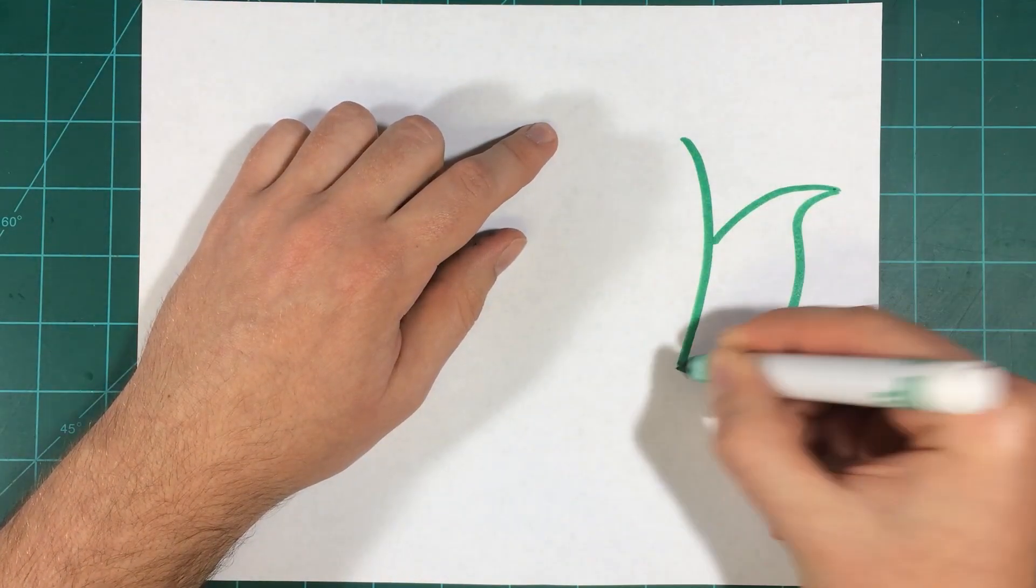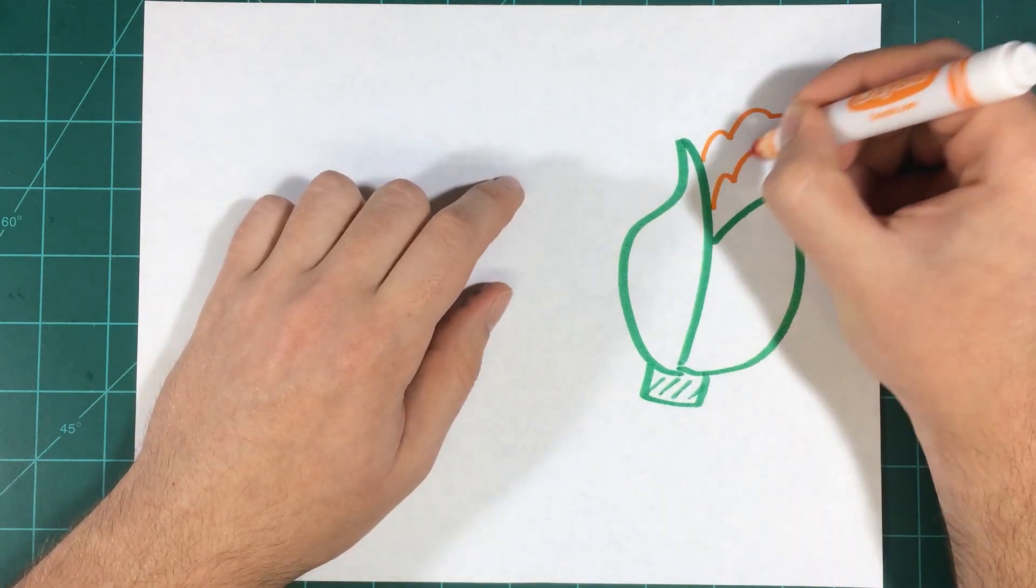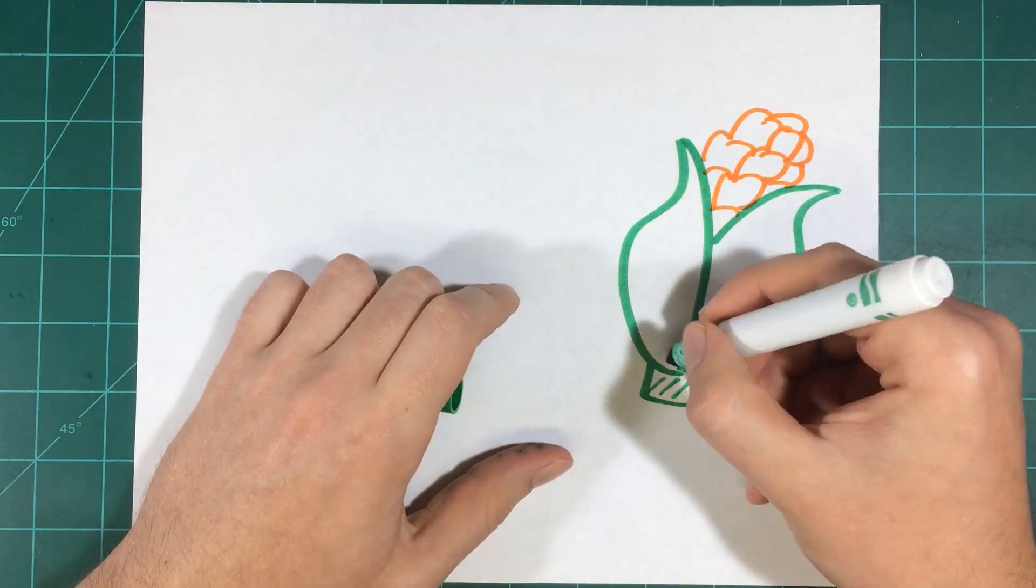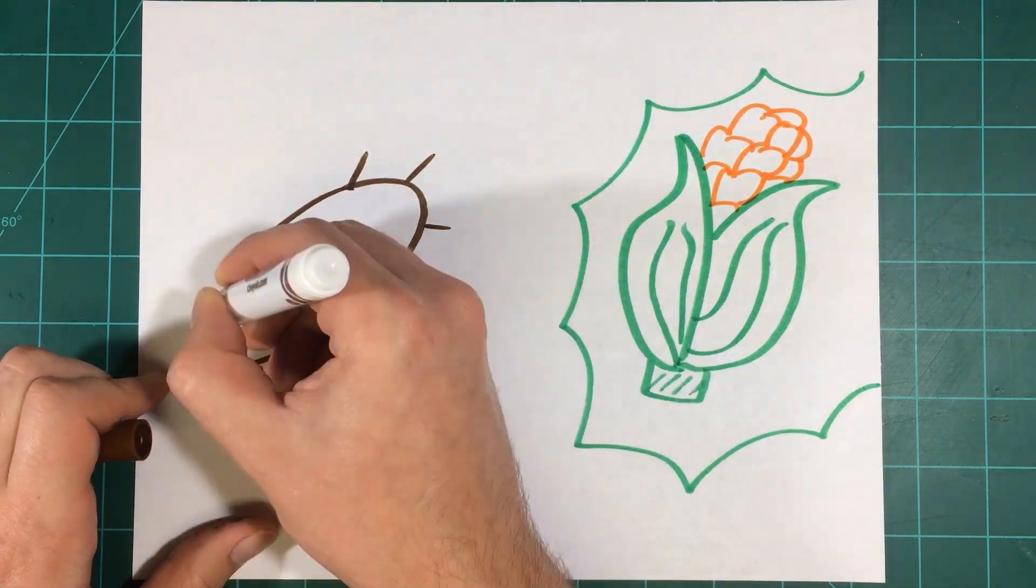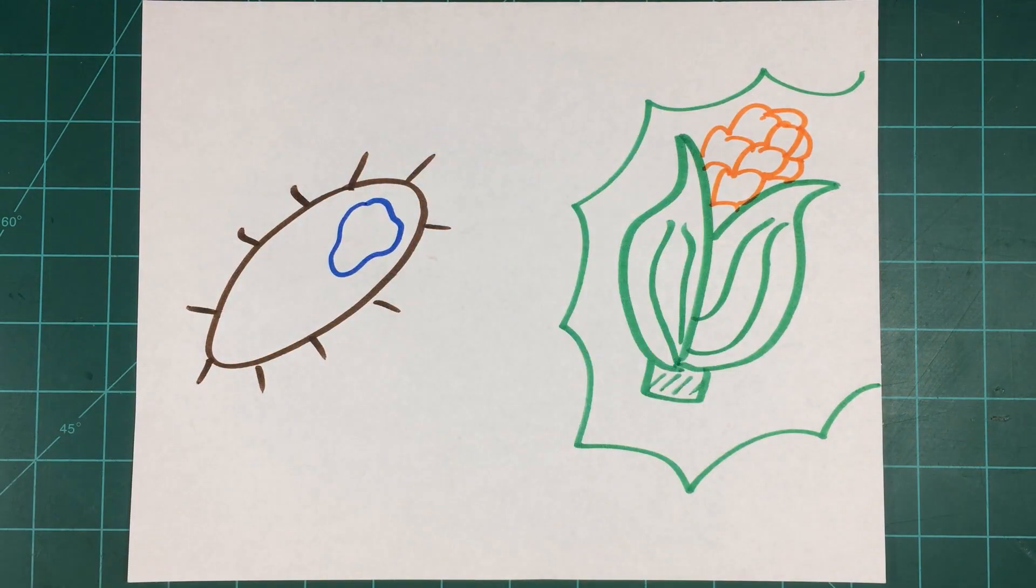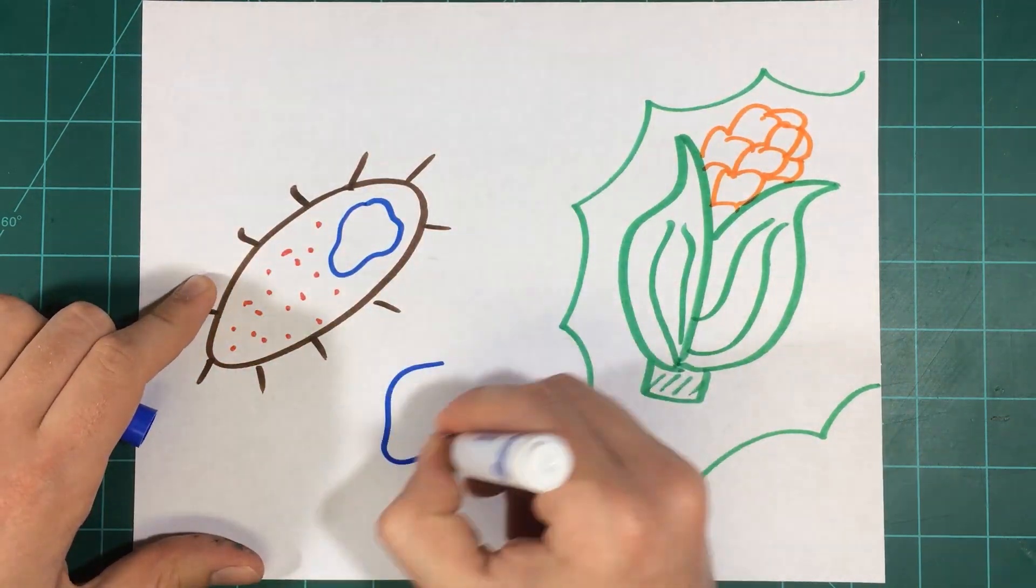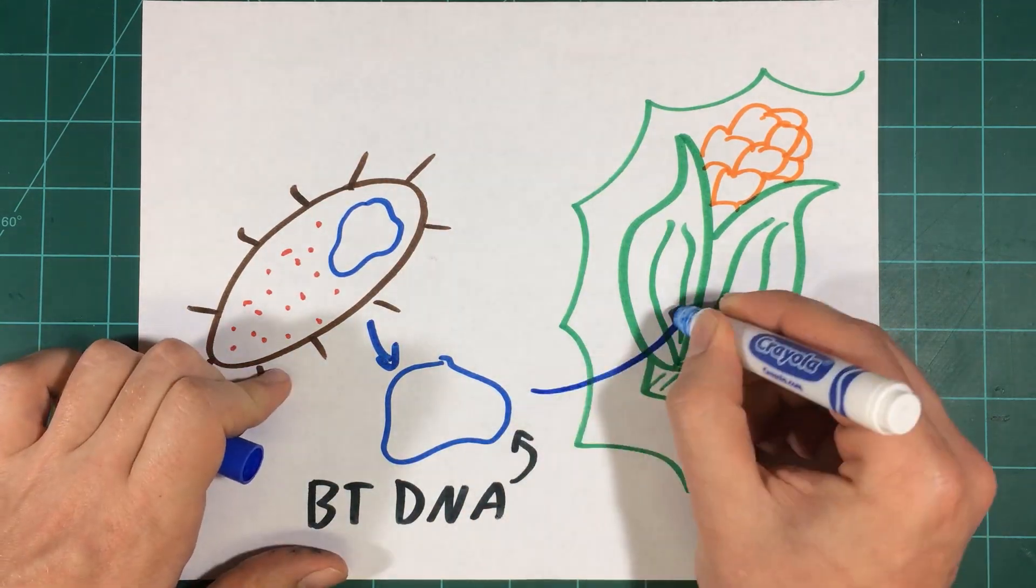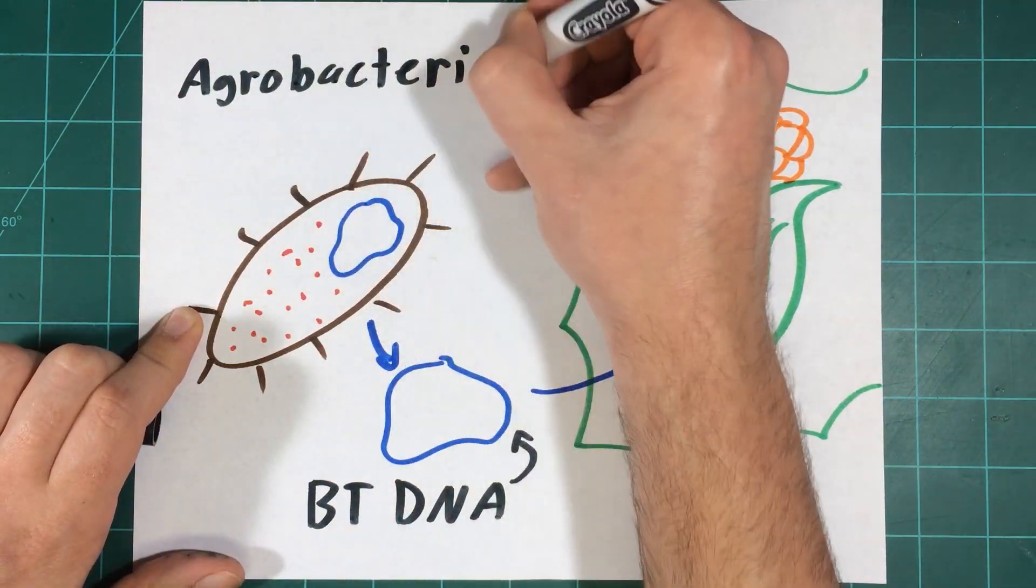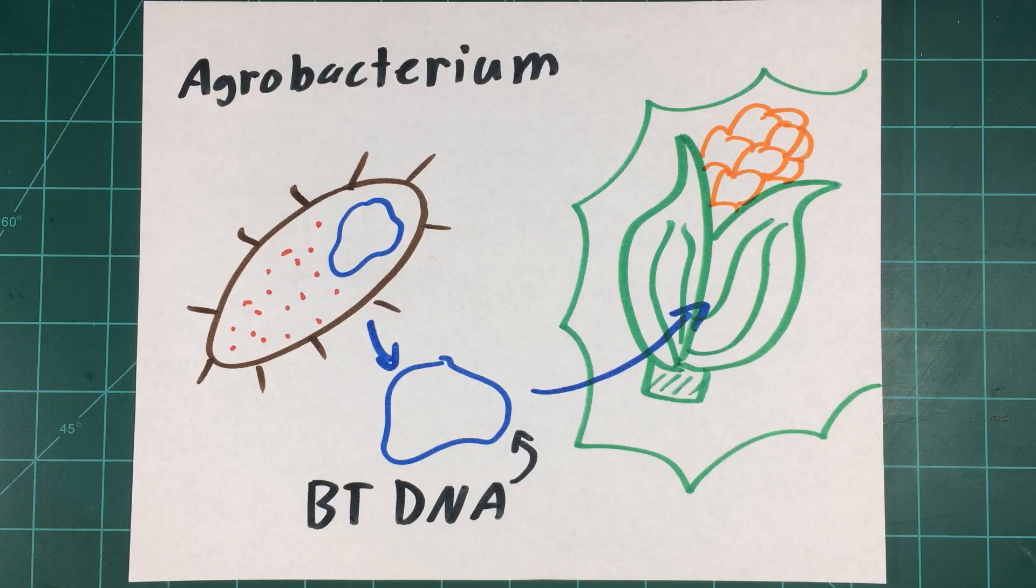The gene gun has lately fallen out of favor and has been replaced by methods such as the use of Agrobacterium tumefaciens. Tumefaciens are another type of soil bacteria that is found all over the world. This bacterium possesses a very interesting ability to carry a set of DNA to a target cell and deposit the DNA in the genome of the target cell.